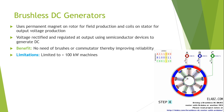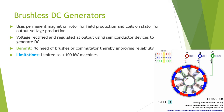The disadvantages of the commutator used in conventional motors include frictional losses. The friction of the brushes sliding along the rotating commutator segments causes power loss, which can be significant in a low-power motor.